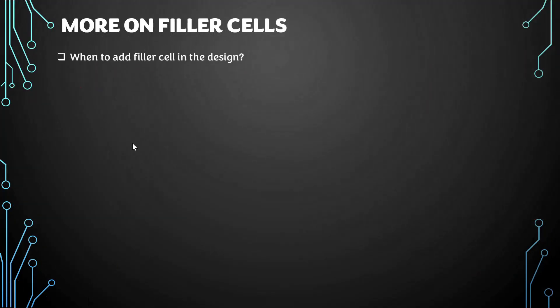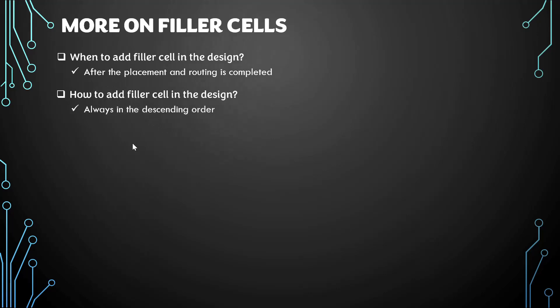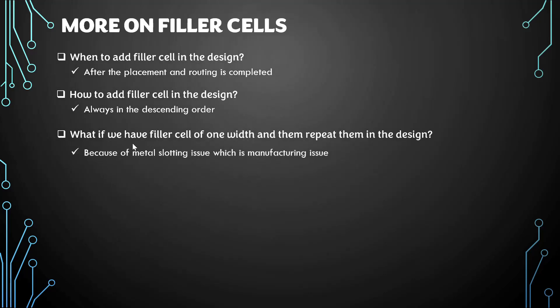When should we add filler cells? After placement and routing are completed. How do we add them? Always in descending order of width. Why do we need multiple widths? Because if we place continuous low-width filler cells, they will form a wide metal and create a metal slotting rule violation, which is a manufacturing issue. To avoid this, we always insert fat filler cells first and then thin filler cells — that is, in descending order.